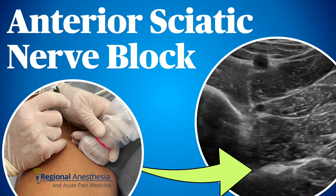The sciatic nerve block is an immensely valuable technique that has many applications in clinical anesthesia. The sciatic nerve can be blocked at a number of locations along its course, but most of these techniques require the patient to be turned on their side or the leg elevated. The anterior approach to the sciatic nerve is attractive because it can be done supine with very minimal patient positioning.